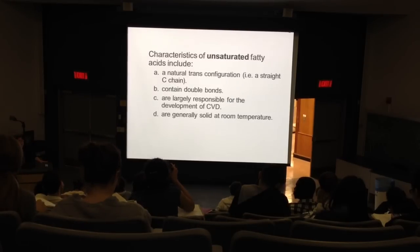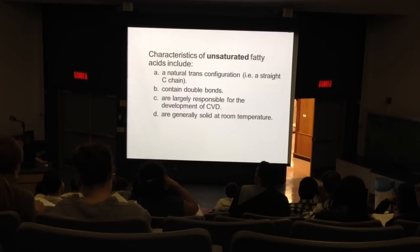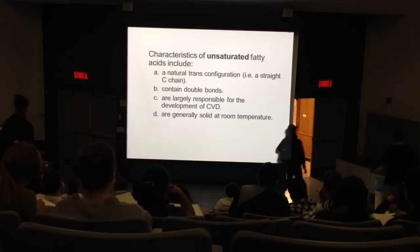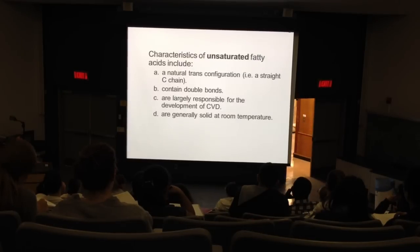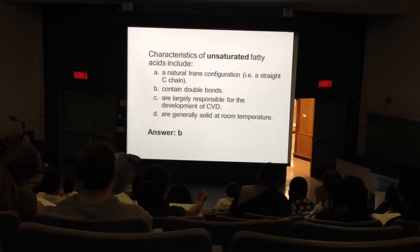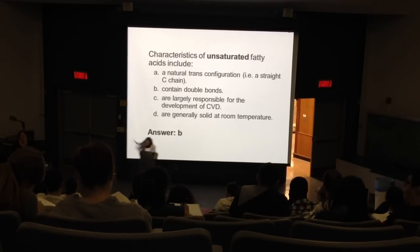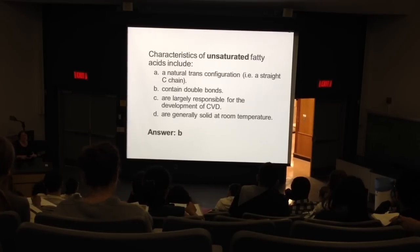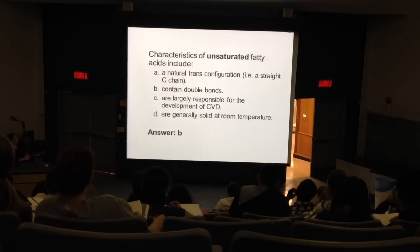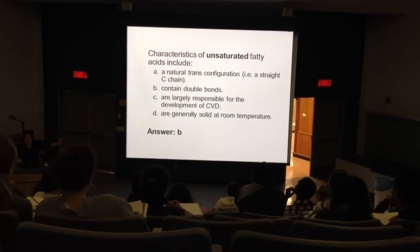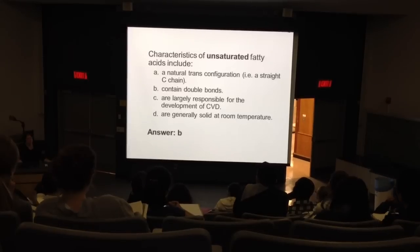What's true of the characteristics of unsaturated fatty acids? One of these is true. They have a natural cis configuration. Remember, trans is a totally unnatural configuration created by hydrogenation. They have at least one double bond in the structure. They're monounsaturated if one double bond, or polyunsaturated if two or more. They are not responsible for cardiovascular disease — it's the saturated fats and trans fats. They are typically liquid at room temperature.